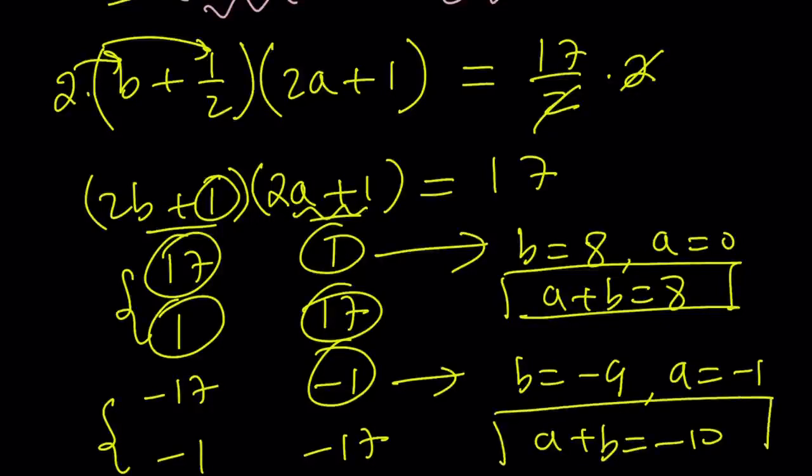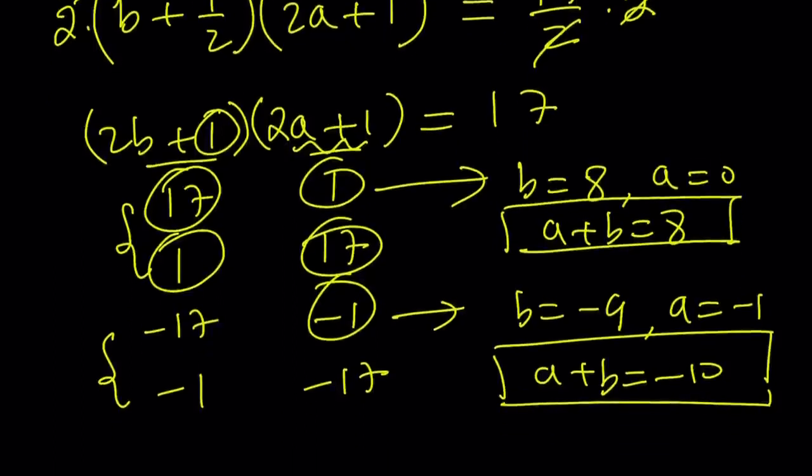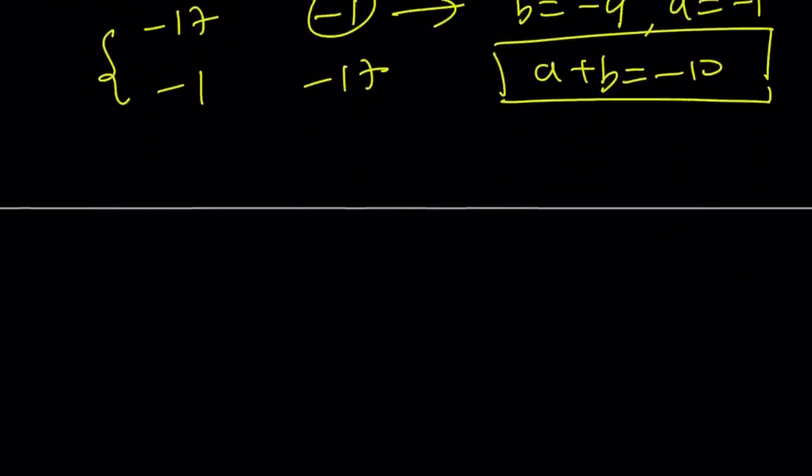So we have two values for a plus b, and those values are 8 and negative 10. Again, if you use the other pair, it won't make a difference. All right? So let's go ahead and take a look at an alternative way to solve this problem real quick, and then we'll finish up.